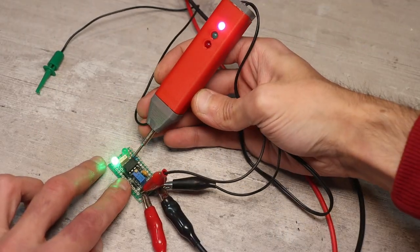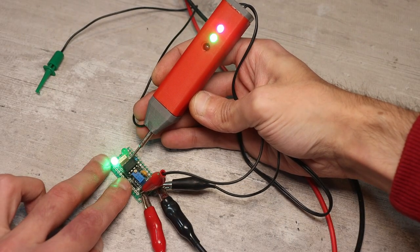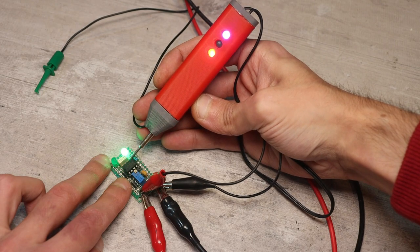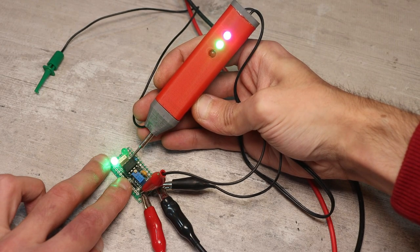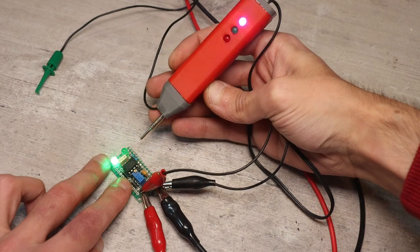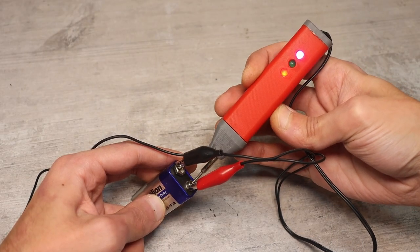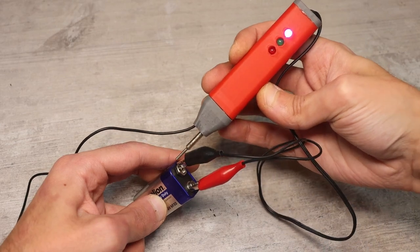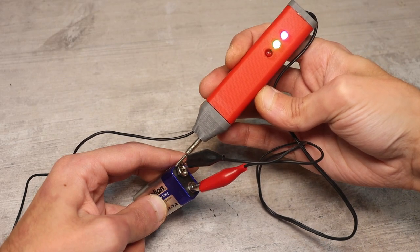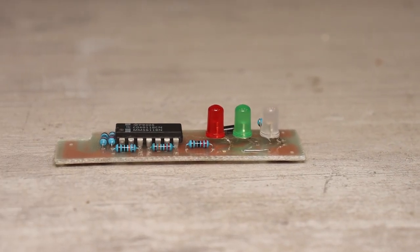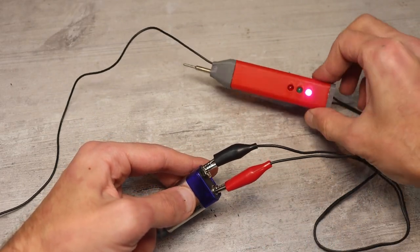The first in the list is a logic probe. The main purpose of a logic probe is to determine the logic signal at the necessary points in the circuit. At high level signal, the red LED will light up. At low level, the green one. The third LED indicates the presence of the supply voltage.